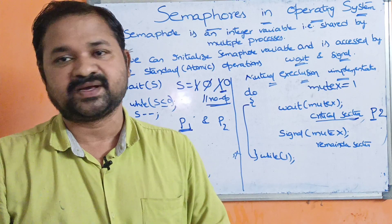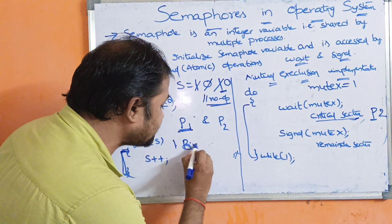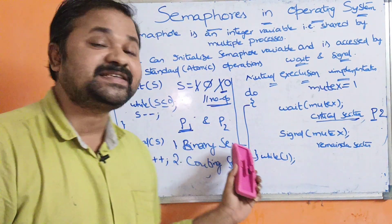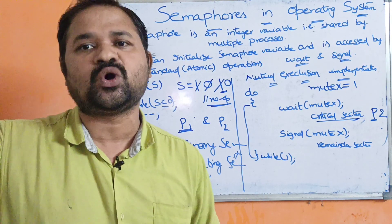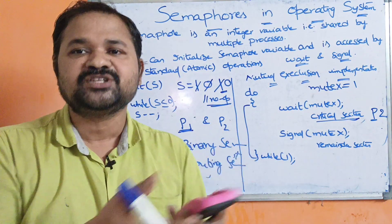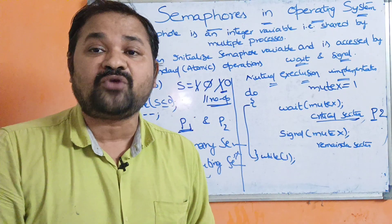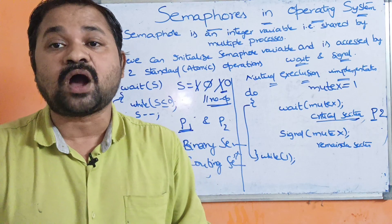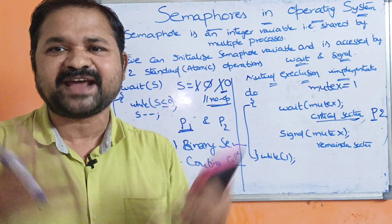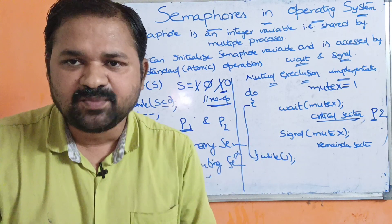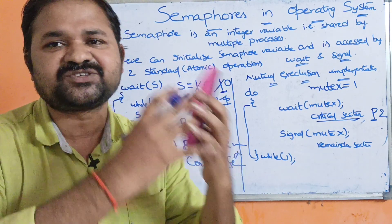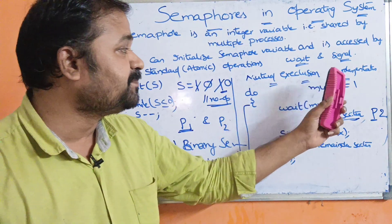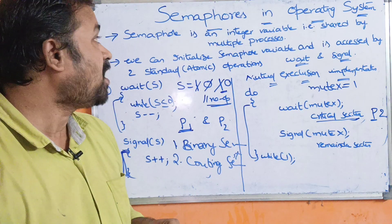Now let us see about types of semaphores. There are mainly two types: binary semaphore and counting semaphore. Binary semaphore means the value of the semaphore is binary — either 0 or 1. Counting semaphore means the value can be any number, such as 10, 20, 30, or 40. Counting semaphores are mainly useful to count available resources in the computer, such as printers, keyboards, mice, and scanners. Binary semaphores are used to implement mutual exclusion.